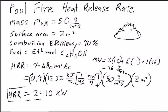Working this out gives a heat release rate of 2410 kilowatts. You would want to check whether this is a reasonable heat release rate for a 2 meter squared fire. Generally, a 1 meter squared fire is around 1000 kilowatts or 1 megawatt, and area wouldn't increase linearly, so you wouldn't expect exactly 2 megawatts. Something around 2500 kilowatts seems reasonable, so 2410 kilowatts is a sensible answer for this type of problem.